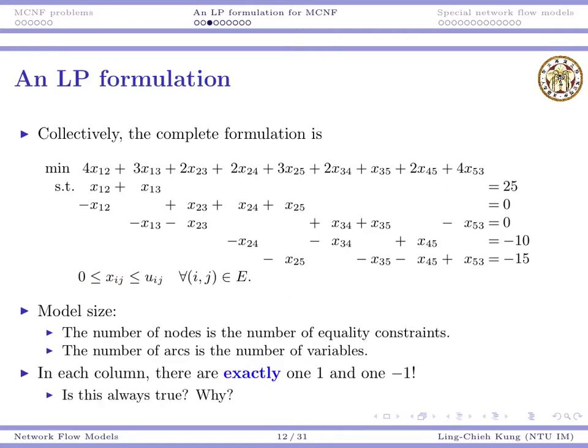One of the most important things that you need to observe is that in each column, more precisely, in each column of those equality constraints, there are exactly 1, 1 and -1. To say this, for this column, there is 1, 1 and -1 as coefficients. For this column, there is 1, 1 and -1, and so on and so on. For all those columns, there are exactly 1, 1 and -1. It turns out that this is always true.